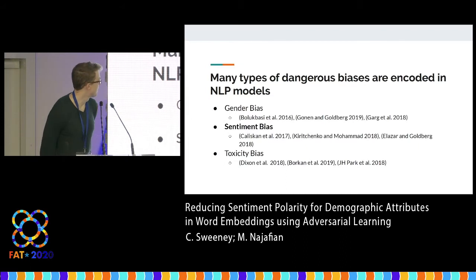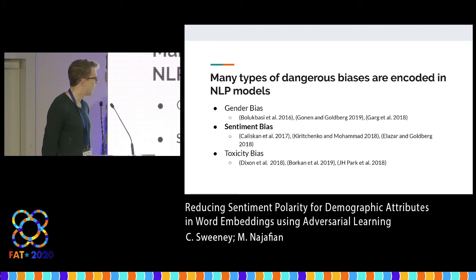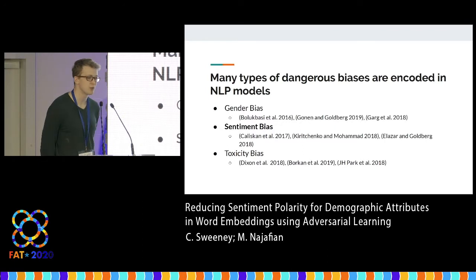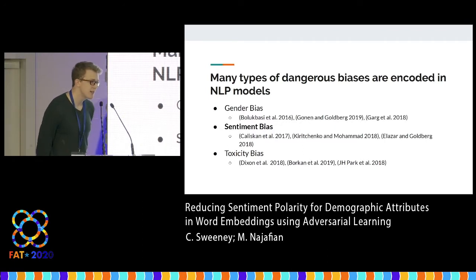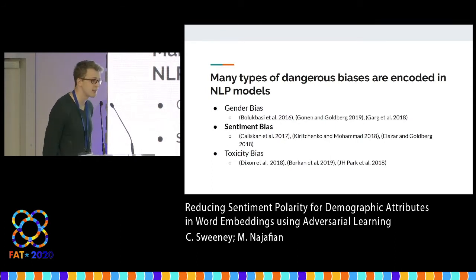As an overview, there are many different types of dangerous biases encoded in natural language processing models. It's really hard to define and categorize what these biases are, so I just summarized the major directions I've seen taken in this field: gender bias, sentiment bias, and toxicity bias. This work is going to focus mostly on sentiment bias.